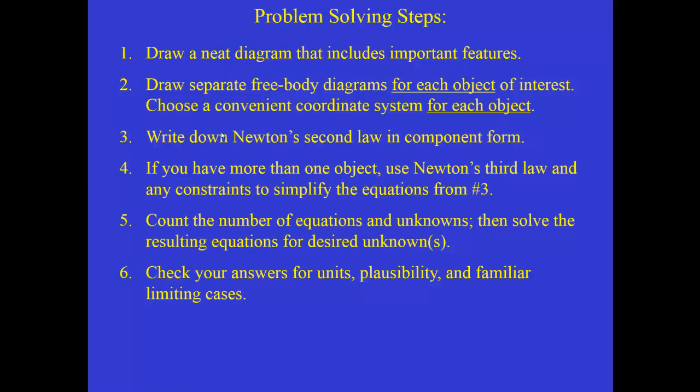And then there are often constraint equations. When there's more than one object, those two objects may move in such a way that their accelerations are related to one another. They may be the same, they may not be the same, but they may be related to each other in some way that just depends on the physical situation and the way that those two masses are connected. So, those constraints will often allow us to simplify the equations that we've written down before. Five, count the number of equations you have and the number of unknowns. If you have the same number of equations as you do unknowns, then you have enough information to solve the problem.